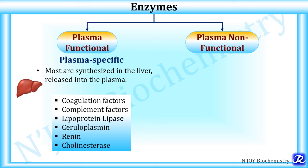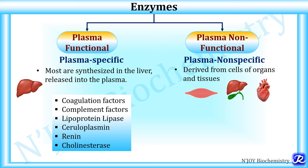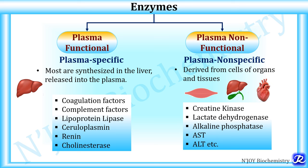Plasma non-functional enzymes are also called plasma non-specific enzymes. Most of these enzymes in the plasma serve no function, and they are derived from cells of organs and tissues. These enzymes are present in high concentration within the cells and at low levels in normal plasma. They are mainly derived from cells destroyed in normal tissue turnover, and whenever there is damage to these organs, they are released into the plasma and their level will be increased. Examples include creatine kinase, lactate dehydrogenase, alkaline phosphatase, AST, ALT, etc.